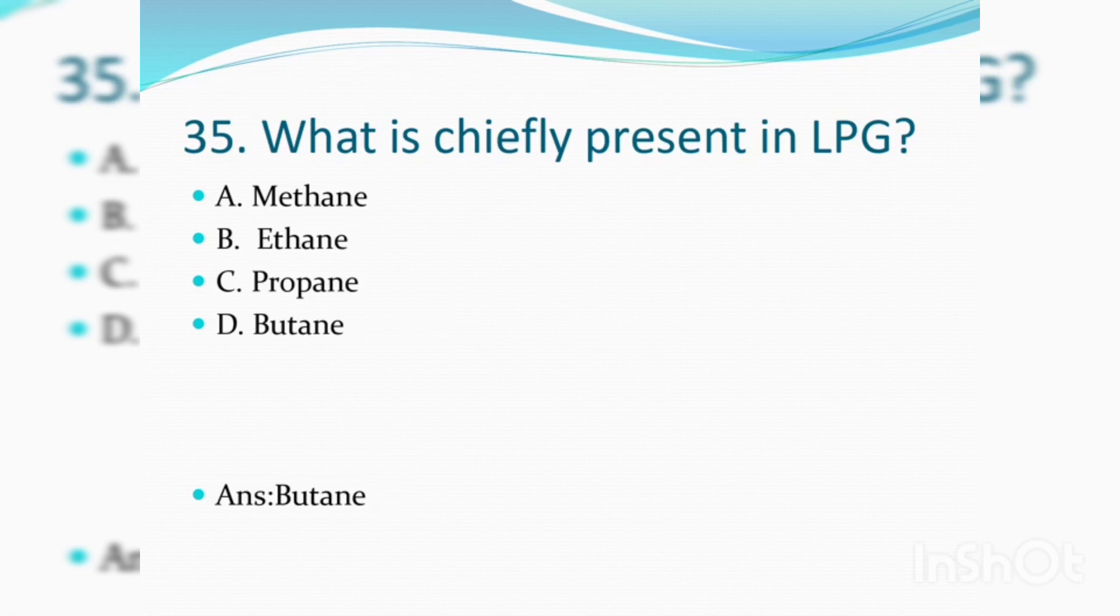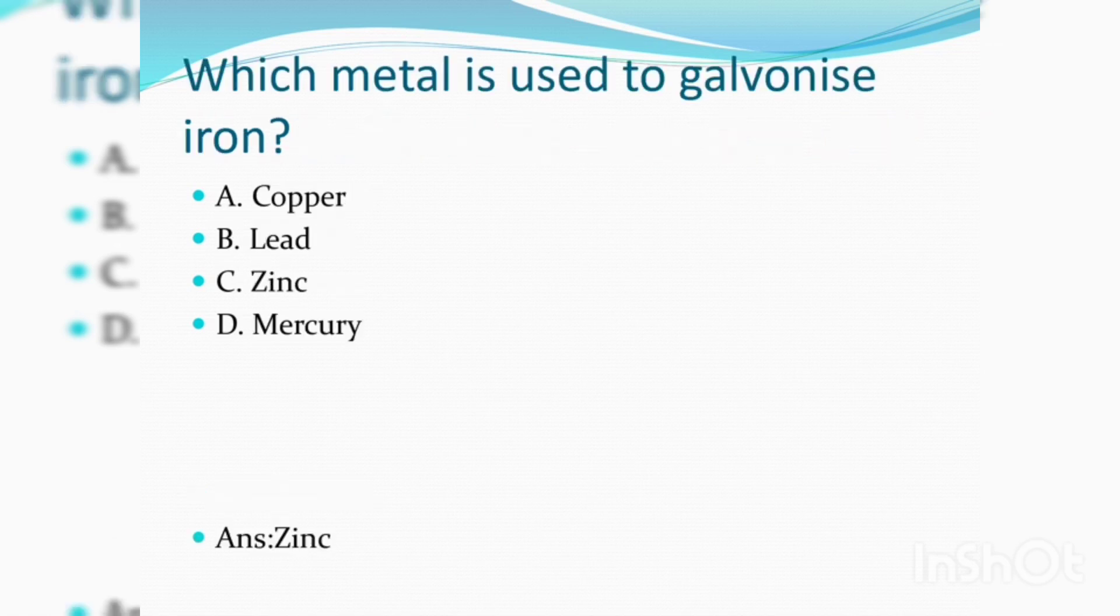What is chiefly present in LPG? Butane. Which metal is used to galvanize iron? Zinc.